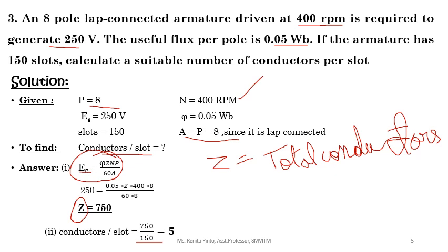Generated voltage EG is given. Phi is given. Z is the total number of conductors — that is what I need to calculate first, and then further calculate conductors per slot. N and P are given; 60 is a constant. Since it is lap connected, A equals P equals 8, so P and A cancel. Calculating this, you get the total number of conductors; then divide by 150 slots to get conductors per slot.